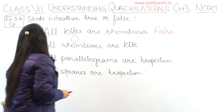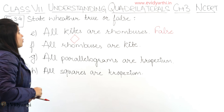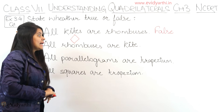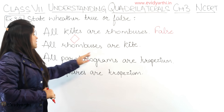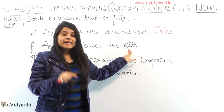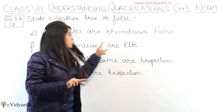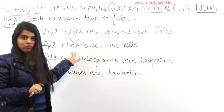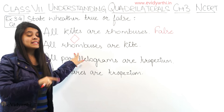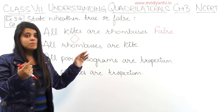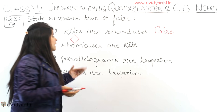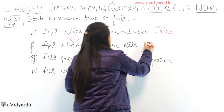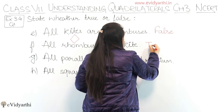The next statement is: all rhombuses are kites. This is true. In a kite, two pairs of adjacent sides are equal. In a rhombus, all sides are equal, which means two pairs of sides are certainly equal. So this statement is true.